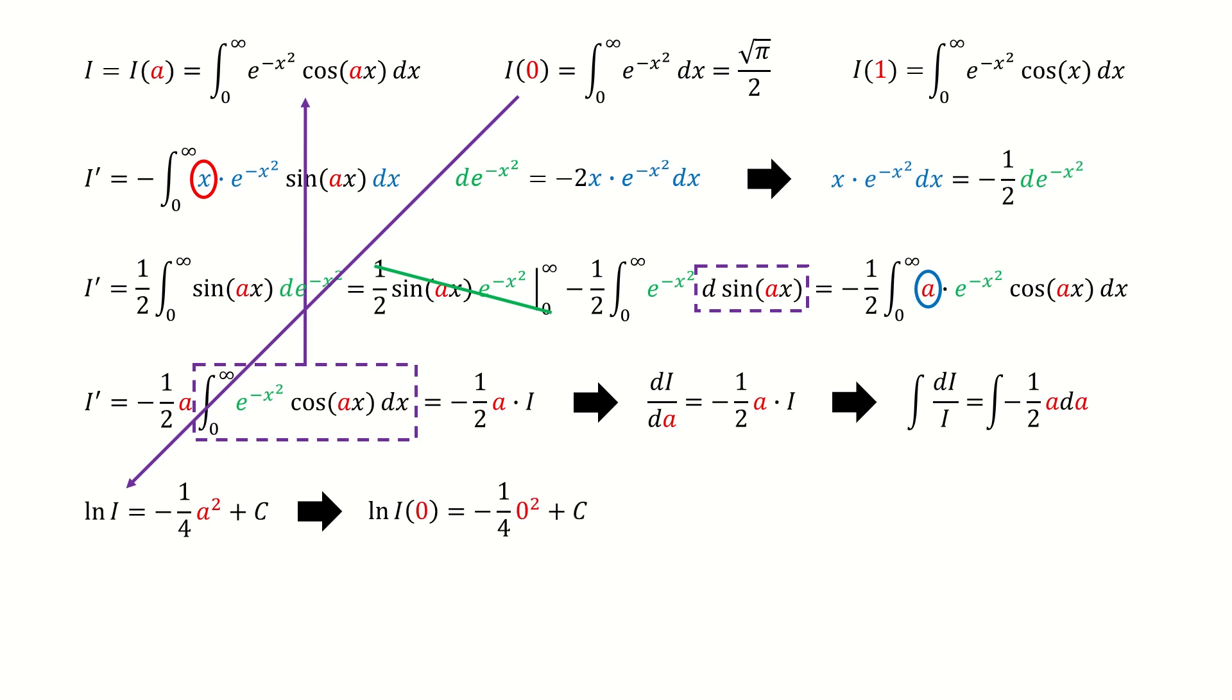And then we plug in the initial condition to determine the constant c. After plugging in the value for I(0), we got the constant c here. And next, from this equation, we can solve for I. After simplifying it, we got the result for this integral in the general form.